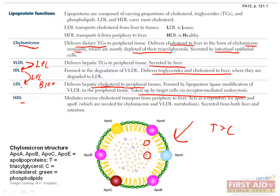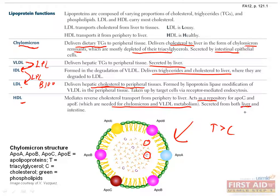Our last lipoprotein is HDL, which is often referred to as the good cholesterol. HDL basically has the reverse function of LDL, since it transfers peripheral cholesterol, including that in atherosclerotic plaques, back to the liver. It also acts as a repository for ApoC and ApoE, which are used for chylomicron and VLDL metabolism. HDL is produced both in the liver and the intestine. When HDL is created, its core is mostly empty, but its membrane has lots of proteins, which gives it its high density. As it travels through the circulation, it picks up cholesterol, causing it to fill up and expand until it ends its journey at the liver.